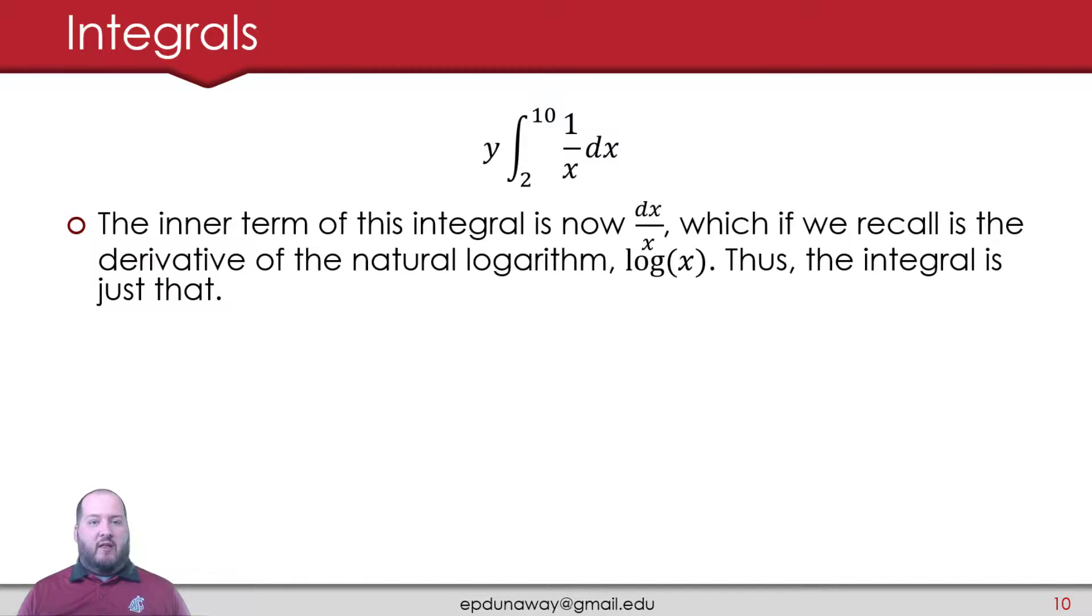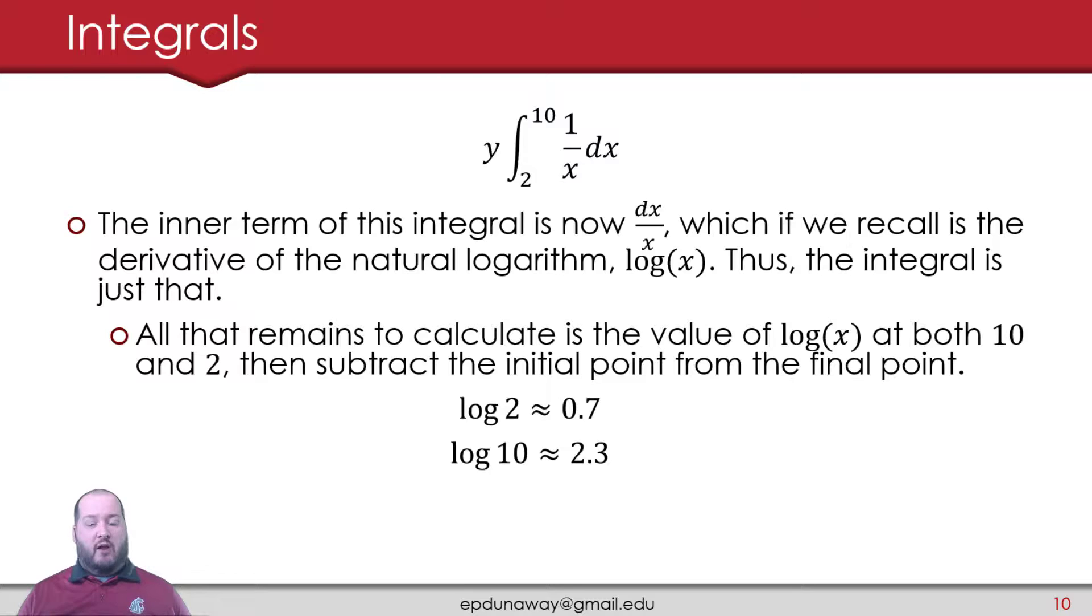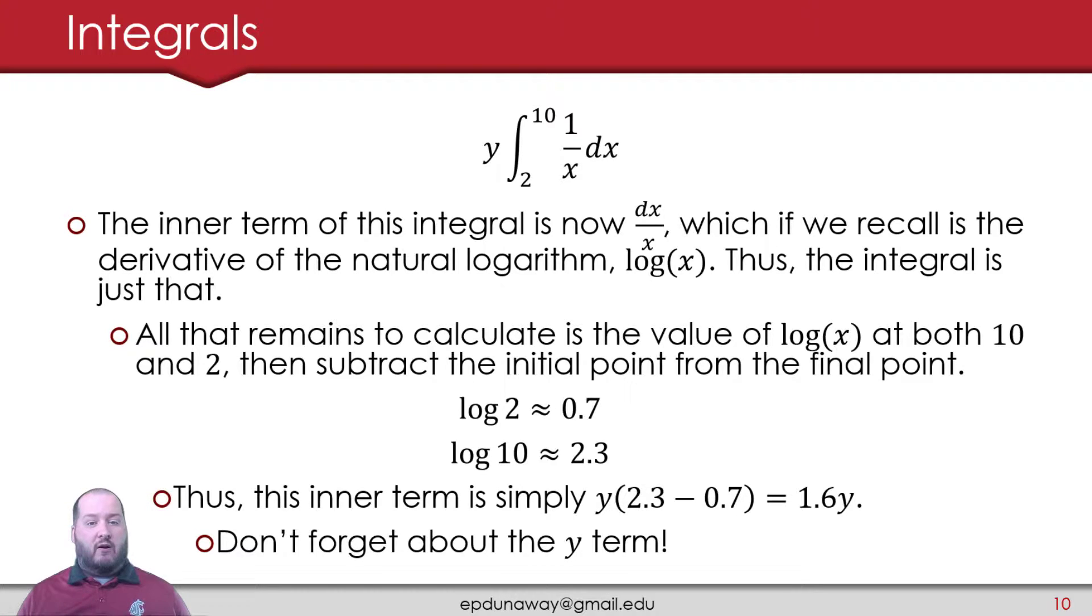If I rearrange this inner term, that's just dx over x. And if you recall, that's just the derivative of the natural logarithm, log of x. So my integral of 1 over x dx is just that, log of x. So all that's left to do now is plug in my initial and my final points at both 10 and 2. Subtract the initial point from the final point. So the natural logarithm of 2 is approximately 0.7. The natural log of 10 is approximately 2.3. Putting that together, my inner term is just going to be y times 2.3 minus 0.7 in parentheses, or 1.6y. Don't forget about that y term. We pulled it out of the integral, but it's still there. So be very careful with that. That's it. That's our first integral, 1.6y. That y remains untouched because it was a constant in this case, because it wasn't our variable of interest.